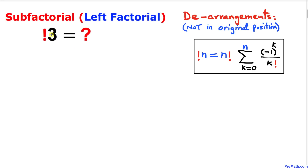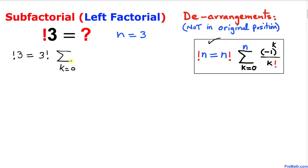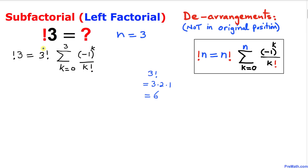Now let me show you how to calculate the sub factorial of 3. In our case, n equals 3. Applying the formula, the sub factorial of 3 equals 3 factorial times the sigma of k going from zero to n — which is three — of negative one to the power k divided by k factorial. Three factorial equals six.